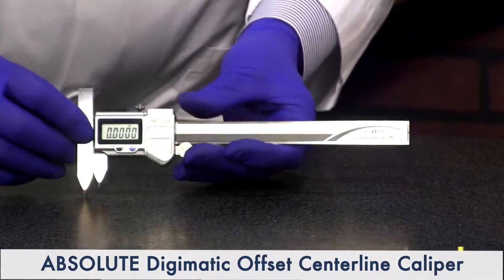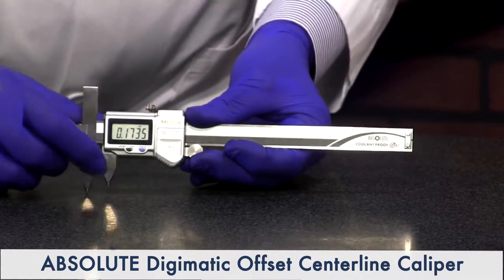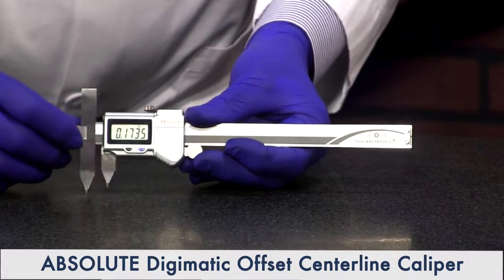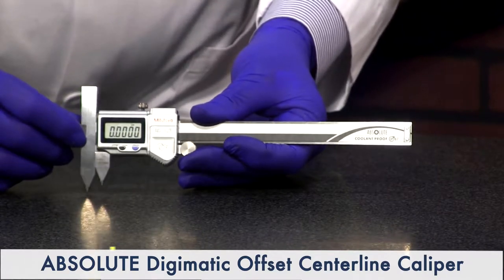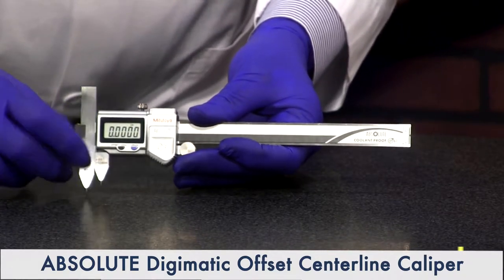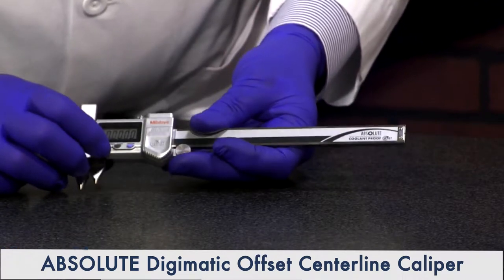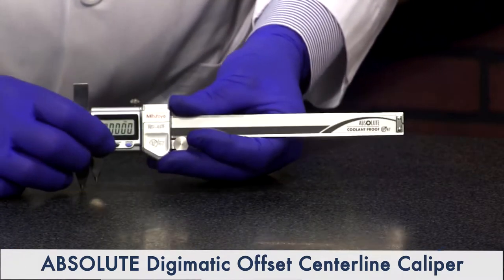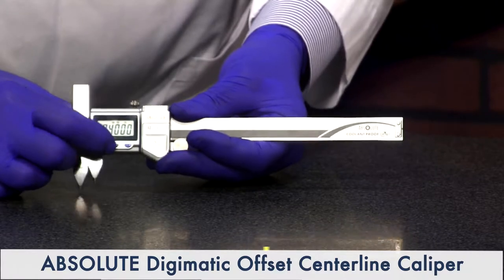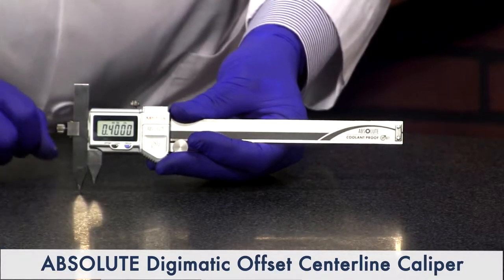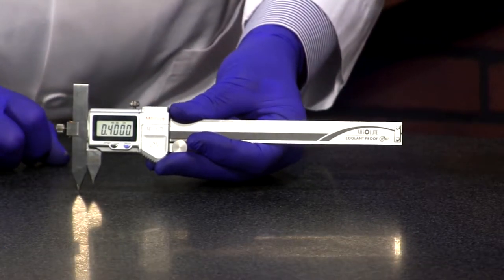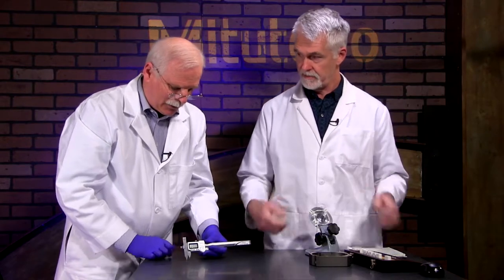So the display will work as a normal caliper. You can put things in between the two flat surfaces and it'll zero out. But when you're going to use these tips, you hold the offset feature on the display, and it changes over to 400 thousandths. That's center to center on the tips.